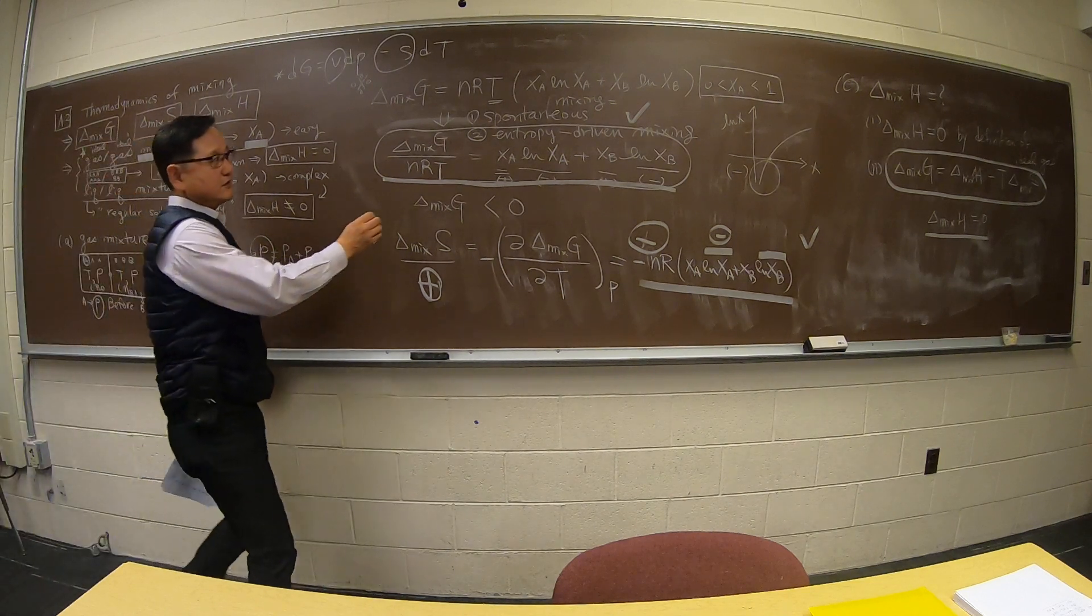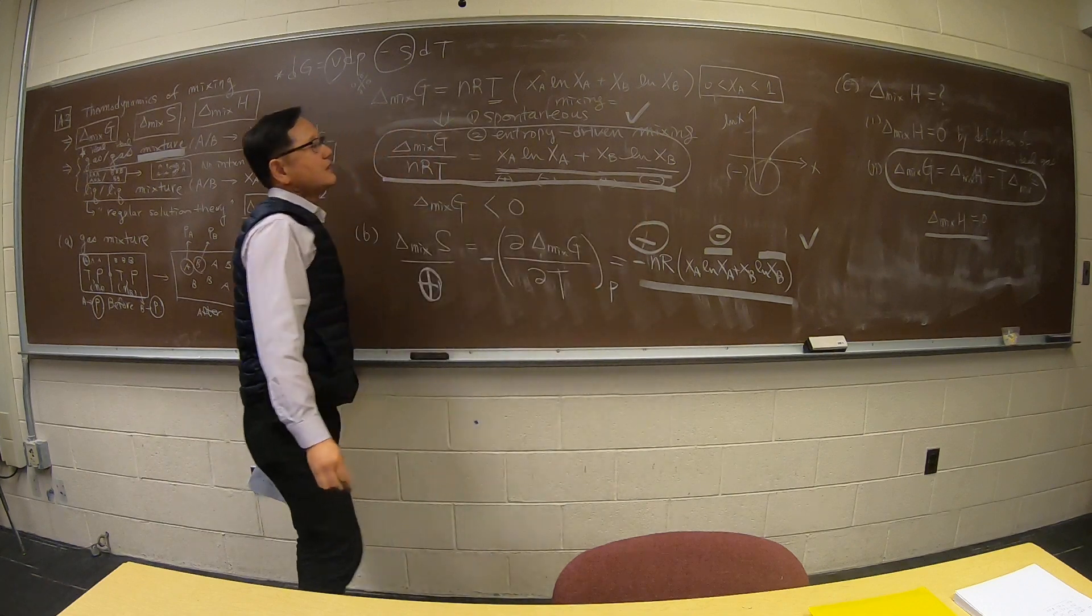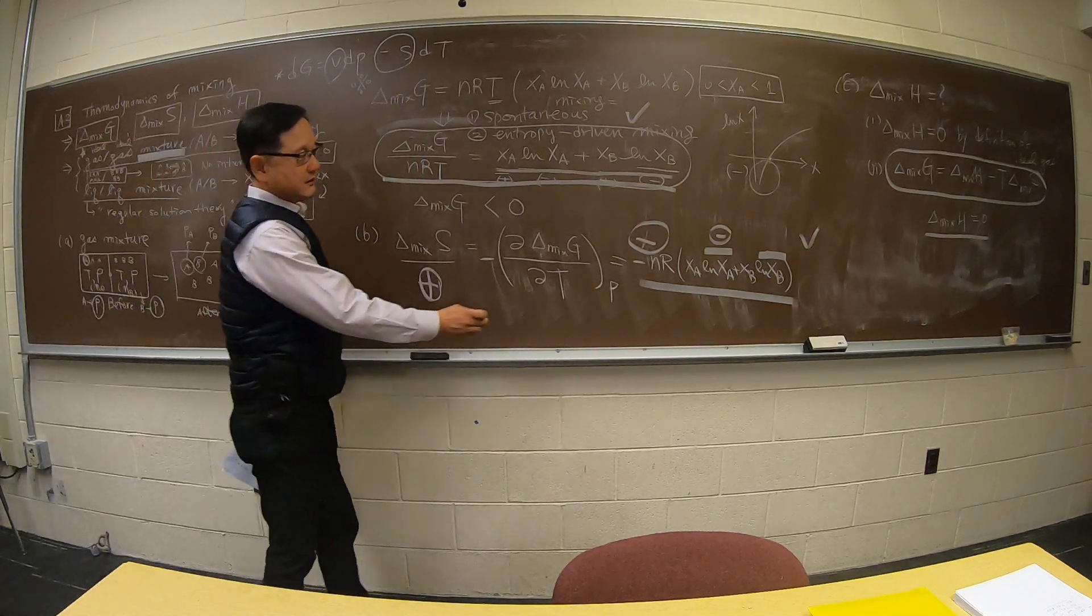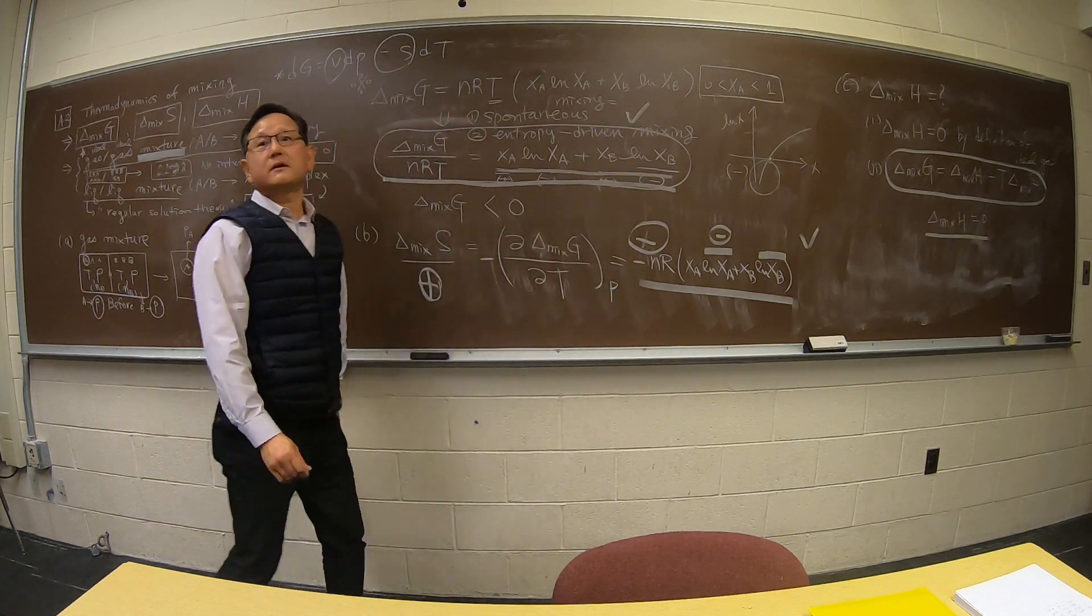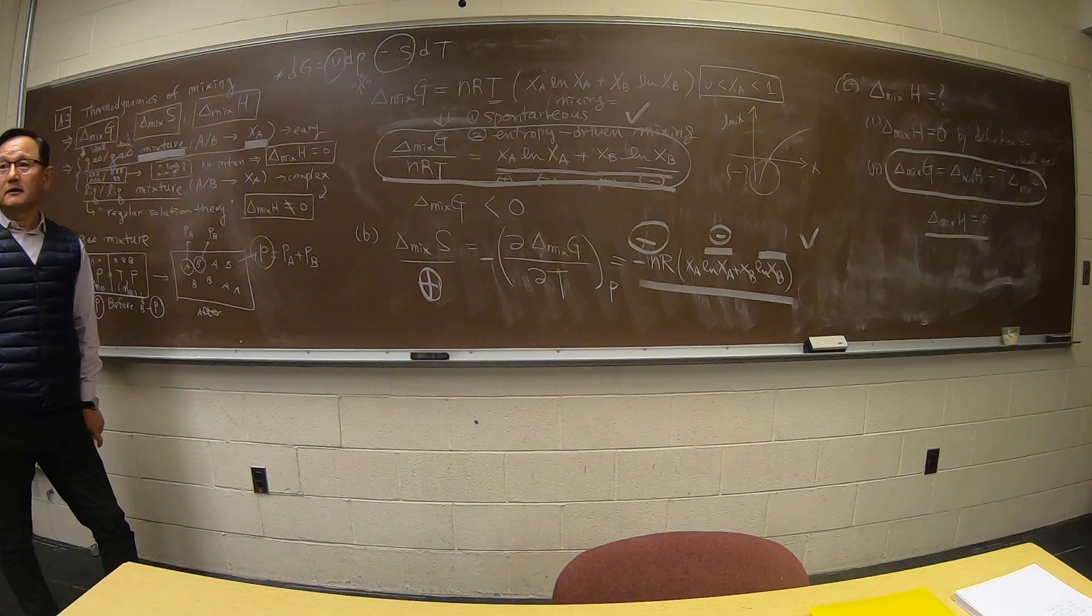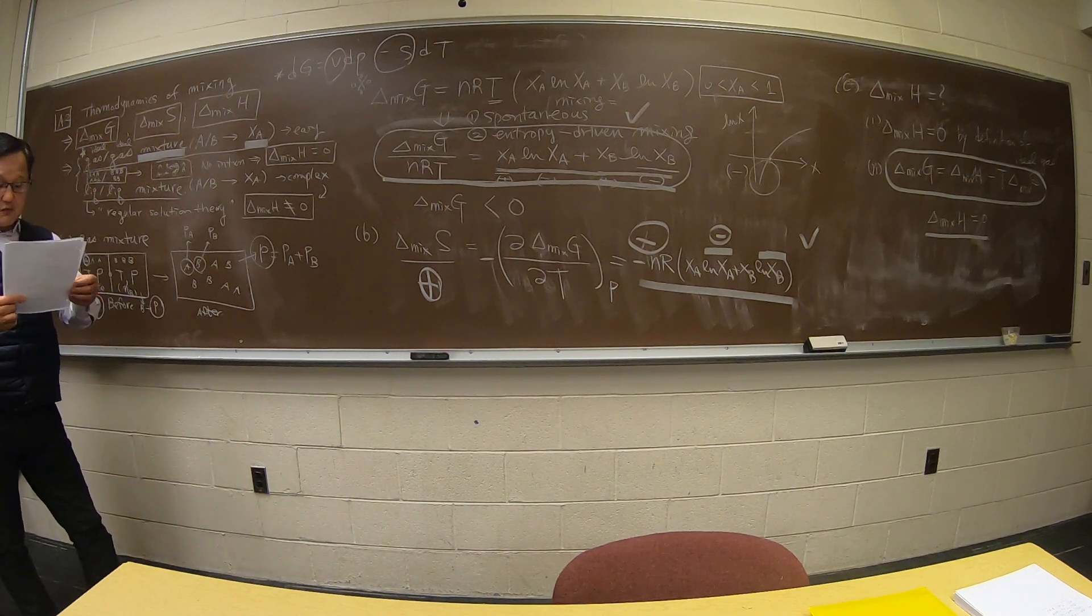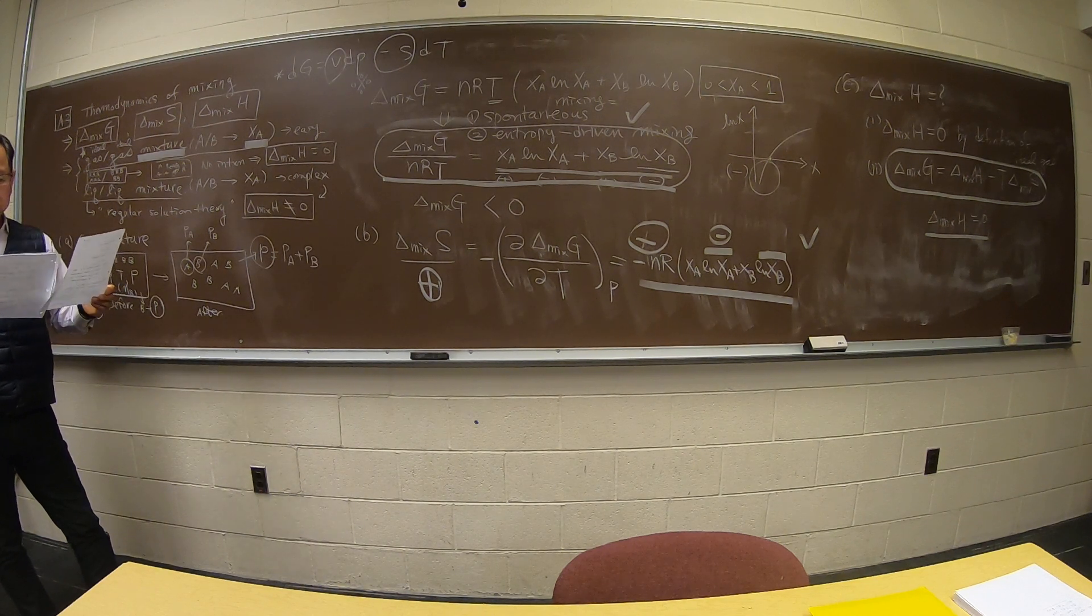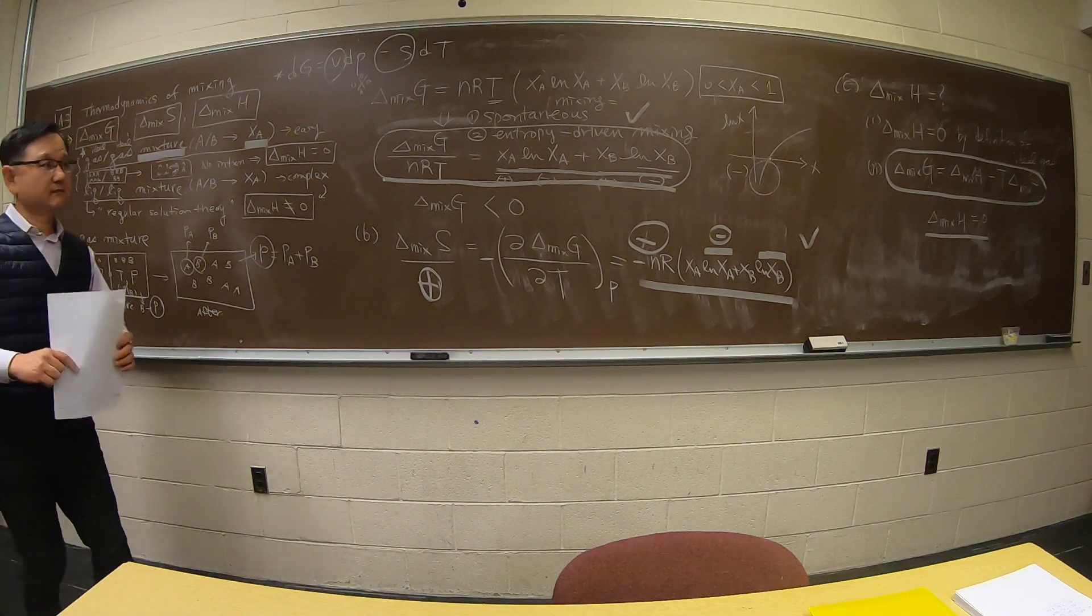So that's the term. This term, what you see - this chemical composition dependent delta G mix - is actually coming from delta S mix only. There is no contribution from delta H mix. So this is an important concept that I'm going to give you more information about. You should be able to write and explain this.